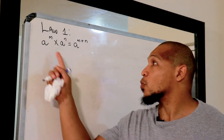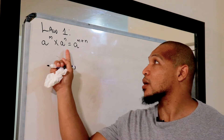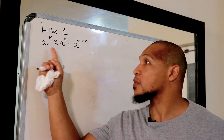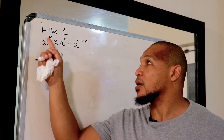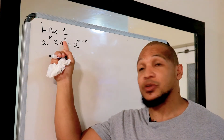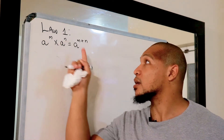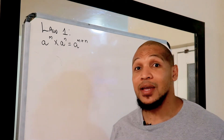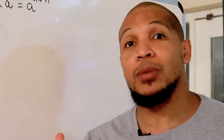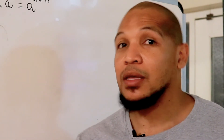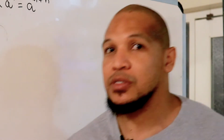Law number one: when we have bases which are the same — in this case we have 'a' — and we have exponent m and exponent n, then we write the base and add the exponents. So law number one: when the bases are the same and we multiply, we add the exponents.